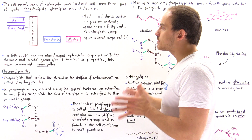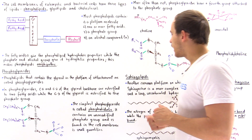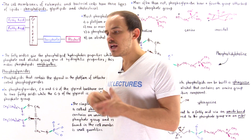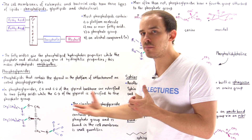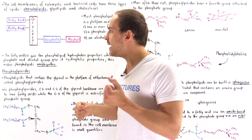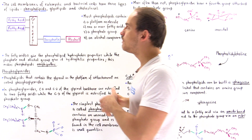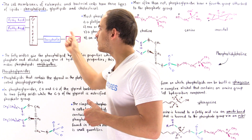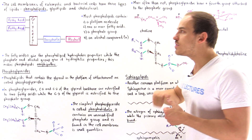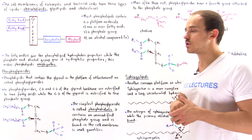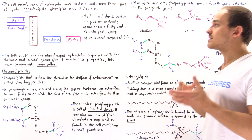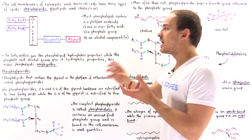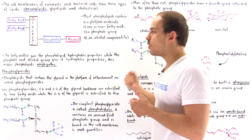Both types of phospholipids — phosphoglycerides and sphingolipids — are amphipathic molecules, meaning they have a nonpolar component and a polar component. The fatty acids give the phospholipids their hydrophobic nonpolar properties, but the phosphate and alcohol groups give them their hydrophilic polar qualities. That's exactly why we call phospholipids amphipathic — because they have groups that can associate with both polar and nonpolar environments.